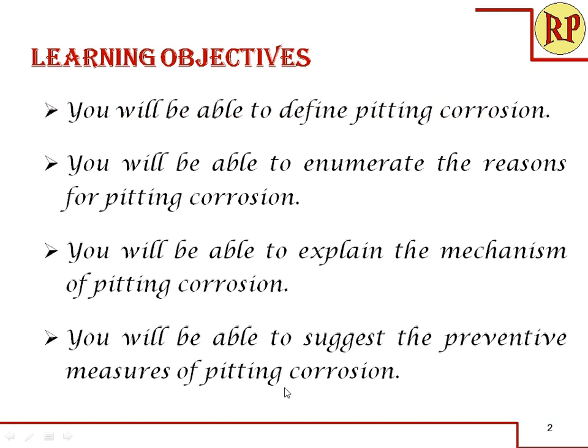At the end of the session we will compare galvanic corrosion, differential aeration corrosion, and pitting corrosion, because all three have a relationship. If a situation is given, you need to identify what type of corrosion it is — when galvanic corrosion becomes pitting corrosion, and when differential aeration corrosion becomes pitting corrosion.